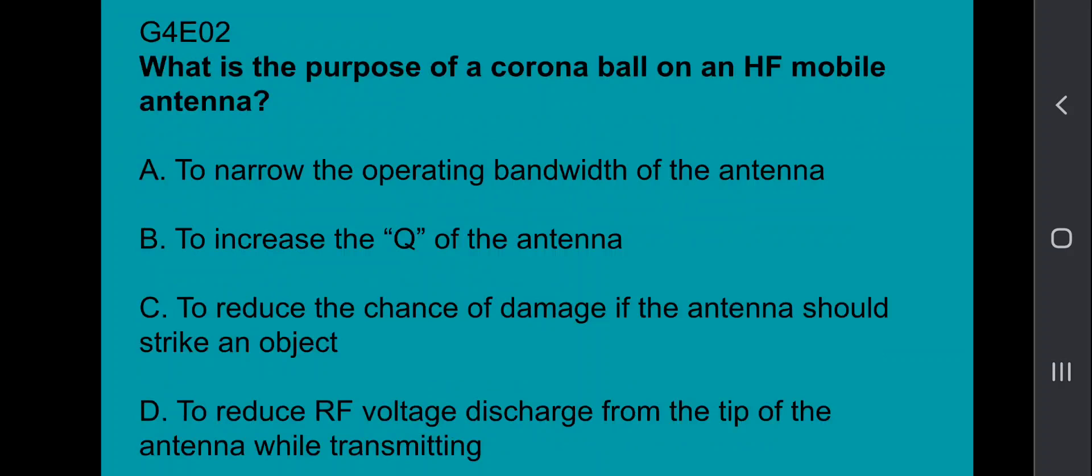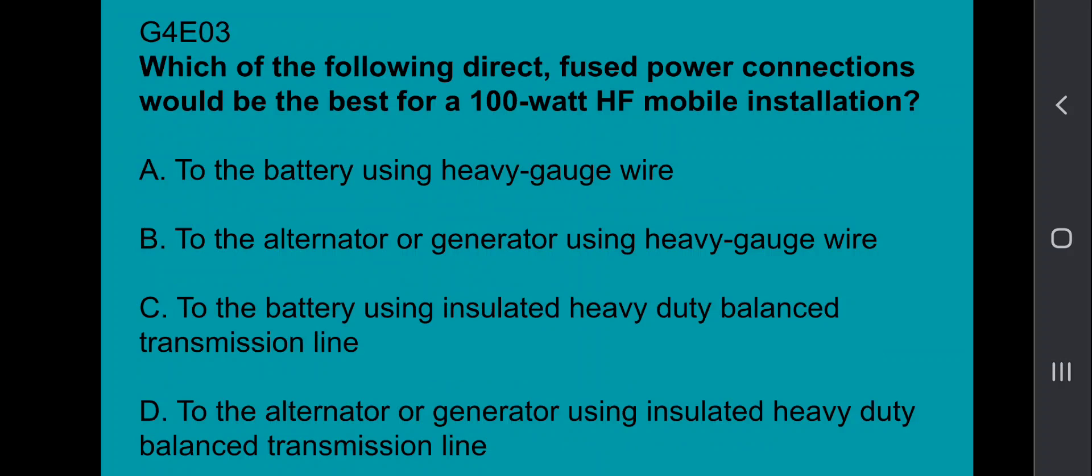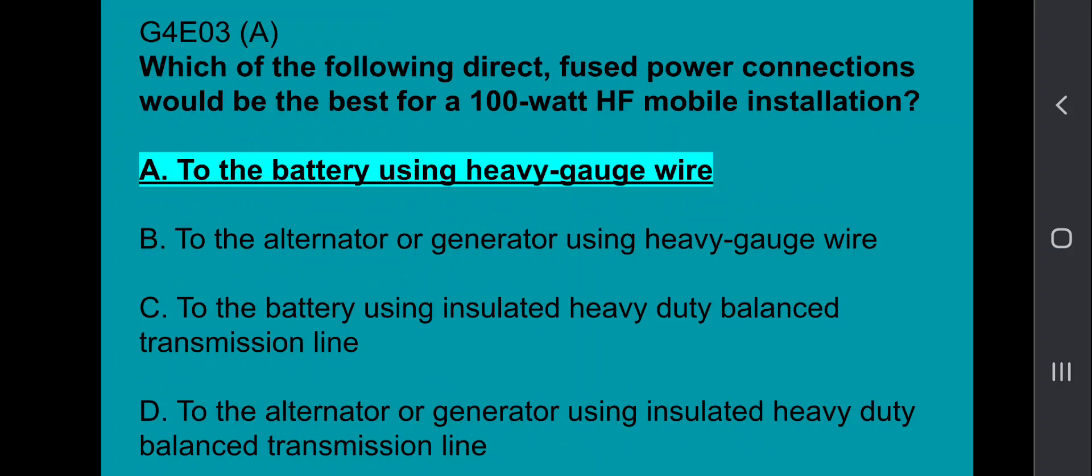G4E02, what is the purpose of a corona ball on an HF mobile antenna? To reduce RF voltage discharge from the tip of the antenna while transmitting. G4E03, which of the following direct fused power conditions would be best for a 100-watt HF mobile installation? To the battery using heavy gauge wire.